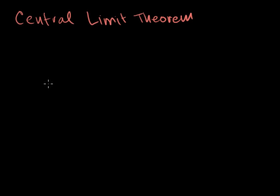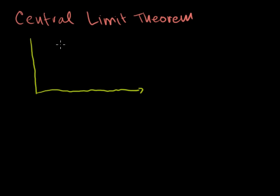What it tells us is we can start off with any distribution that has a well-defined mean and variance, and if it has a well-defined variance, it has a well-defined standard deviation. It could be a continuous distribution or a discrete one. I'll draw a discrete one, just because it's easier to imagine. So let's say I have a discrete probability distribution function, and I want to be very careful not to make it look anything close to a normal distribution, because I want to show you the power of the Central Limit Theorem.